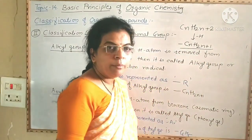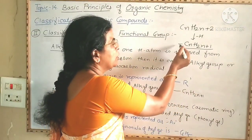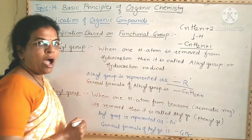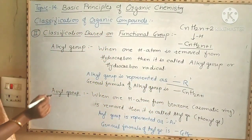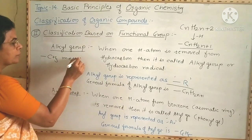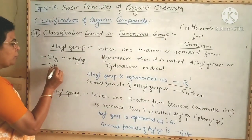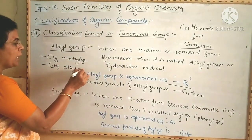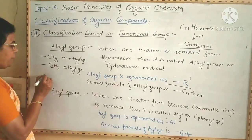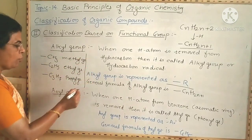When one hydrogen atom is removed, one valency of carbon is not satisfied, and therefore it is shown as -CnH2n+1, represented as -R. For example, if we remove one hydrogen atom from methane (CH4), it becomes CH3 — that is the methyl group. If we remove one hydrogen atom from ethane (C2H6), it becomes C2H5 — that is the ethyl group. If we remove one hydrogen atom from propane (C3H8), it becomes C3H7 — that is the propyl group. These are examples of alkyl groups.